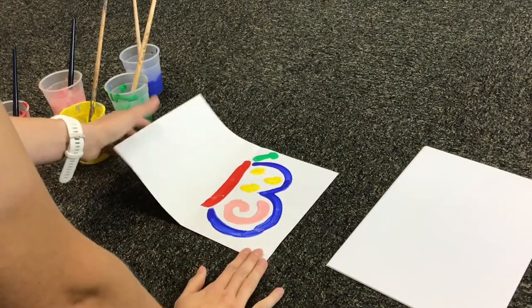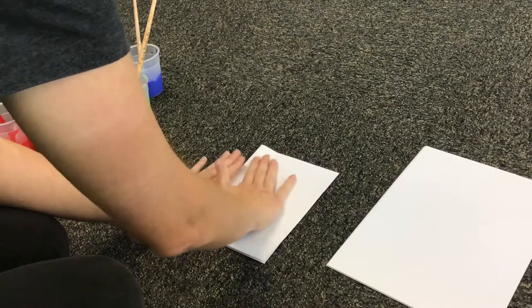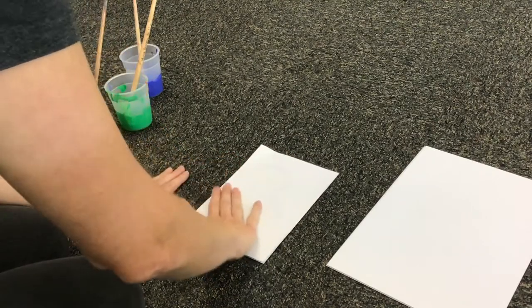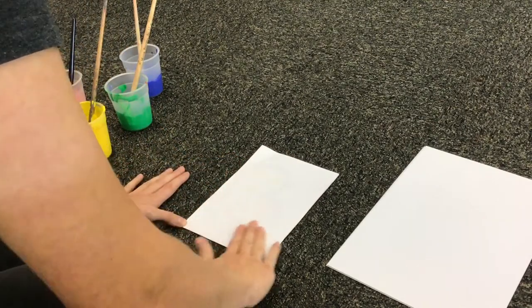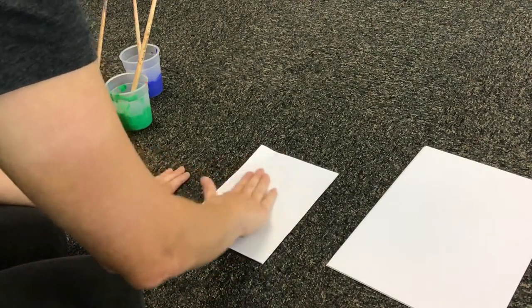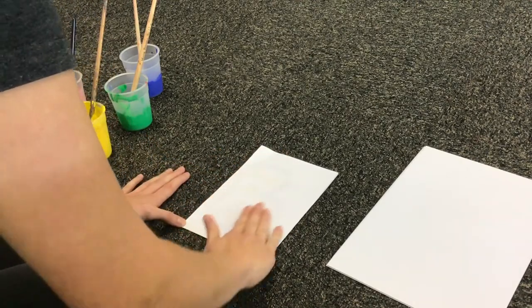Once you have finished painting the first half of your butterfly, fold the paper back along the crease and press down lightly like I am doing in the video. When you have finished pressing down, open it up again to reveal your completed picture.